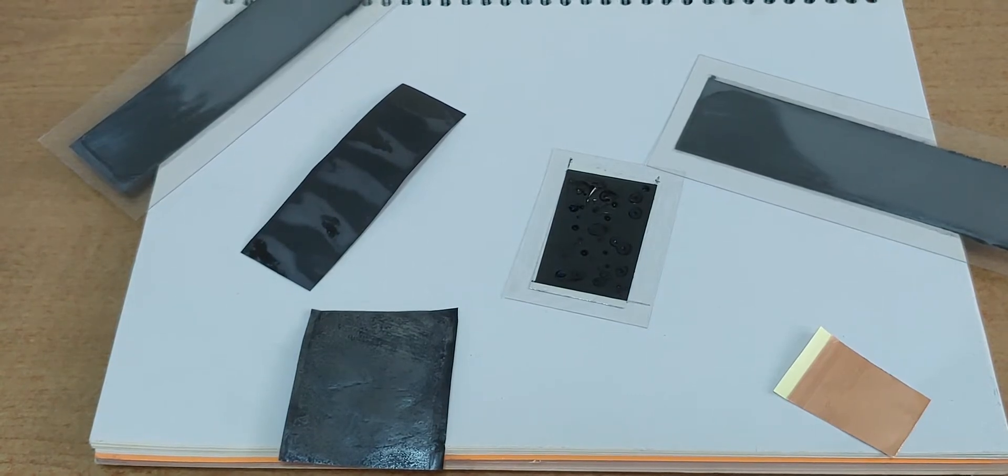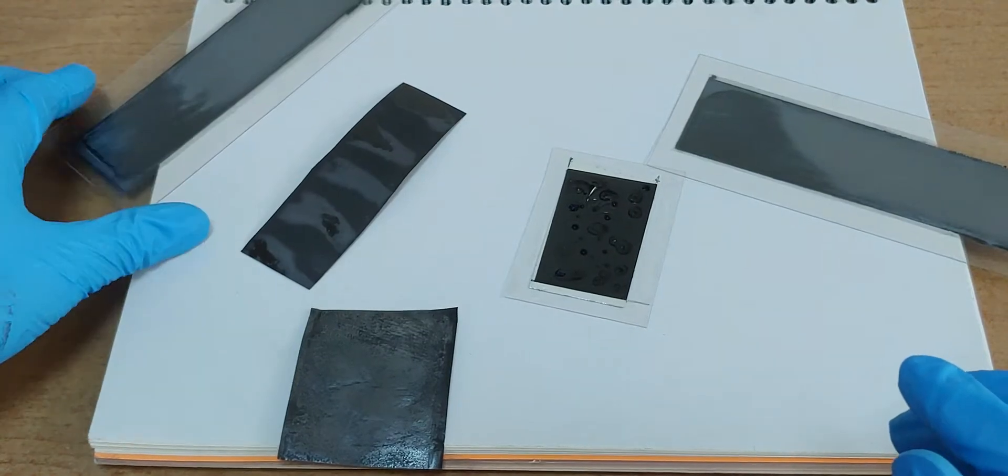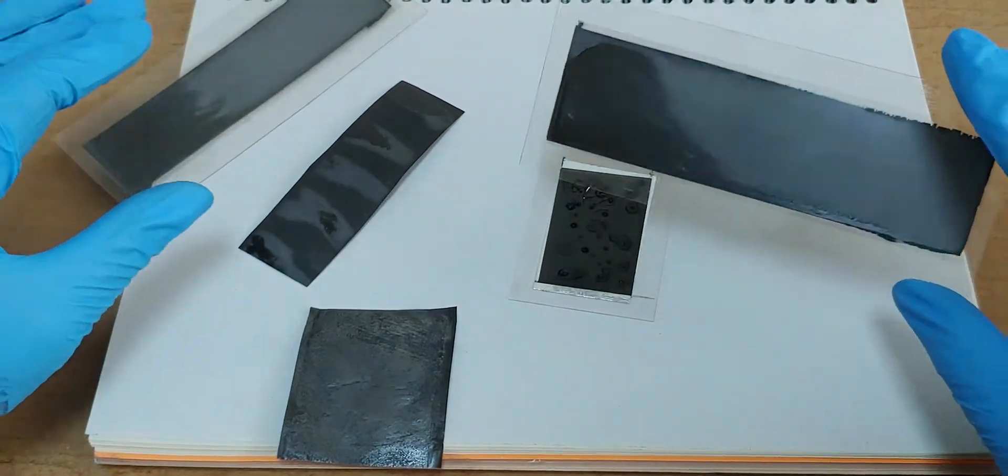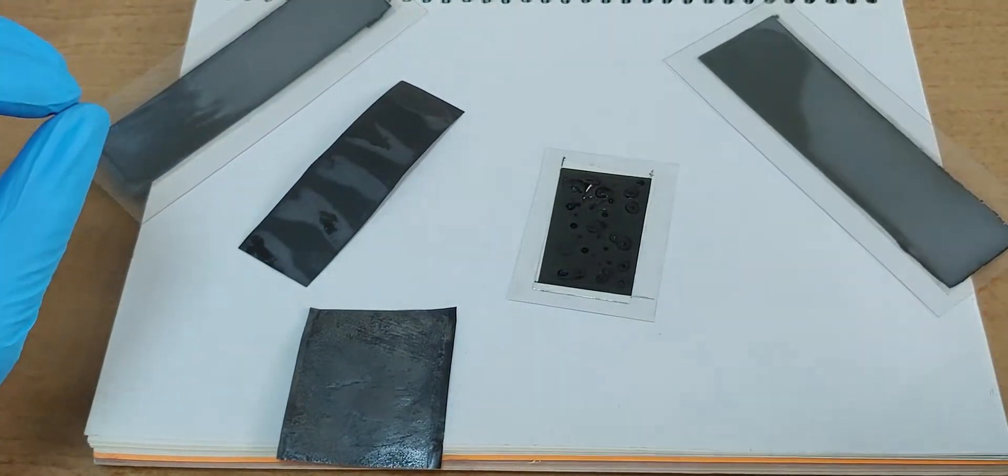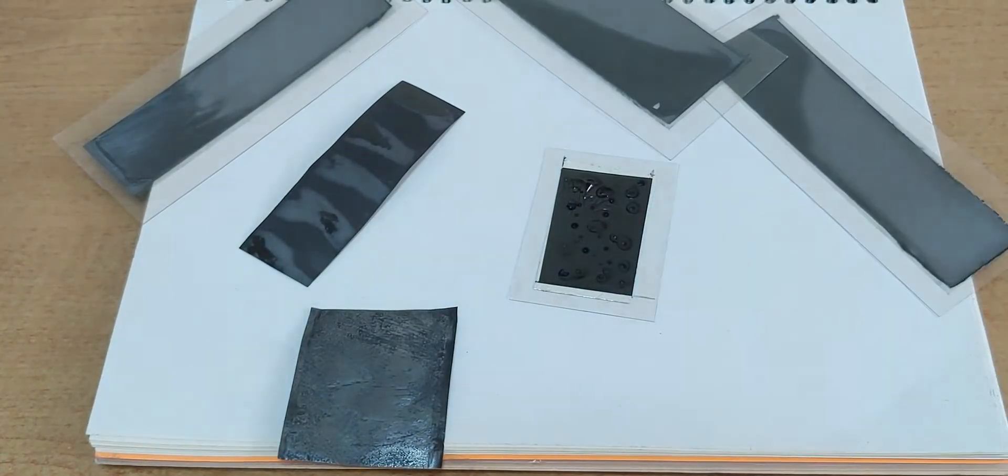Now we have various kinds of electrodes. This is copper and the other ones are graphene, made with conductive ink.